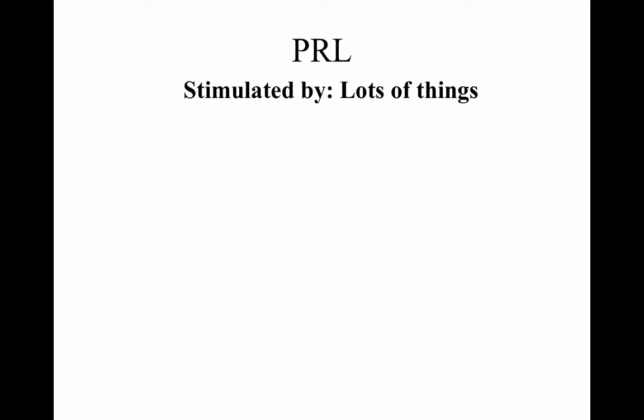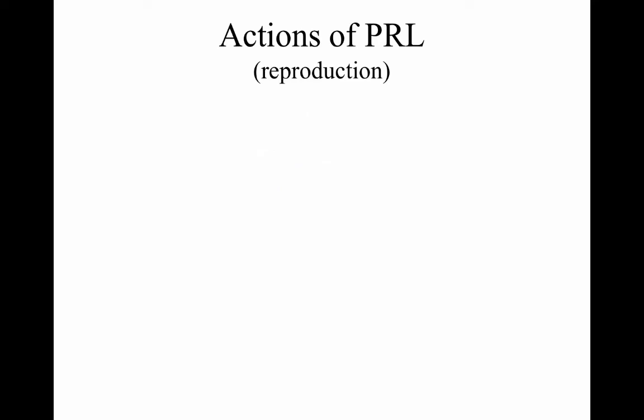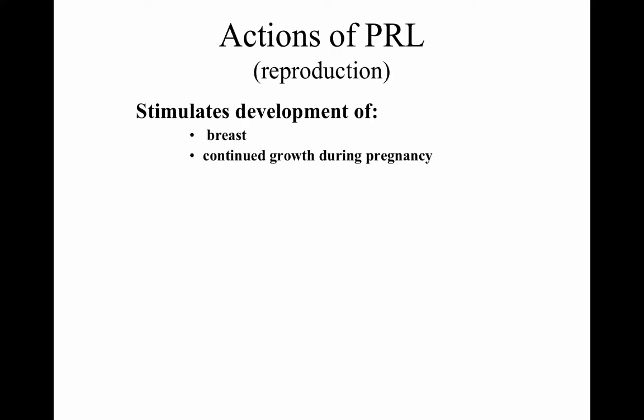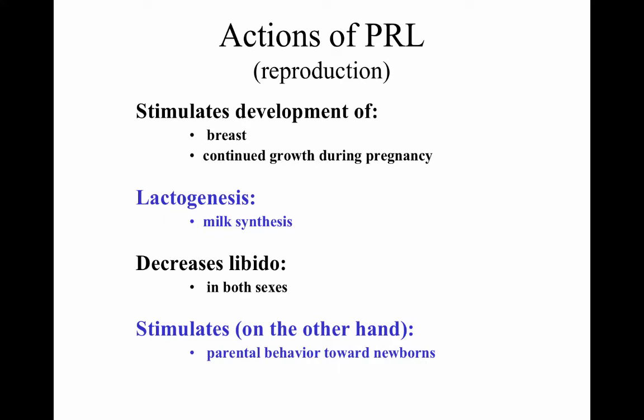Prolactin is stimulated by many things including estrogen, nursing, pregnancy, stress, and sleep. Prolactin is inhibited by dopamine. Actions of prolactin in reproduction include stimulating development of the breast, continued growth during pregnancy, lactogenesis or milk synthesis, decreases in libido in both sexes, and stimulation of parental behavior toward newborns.